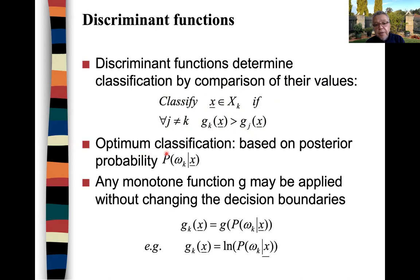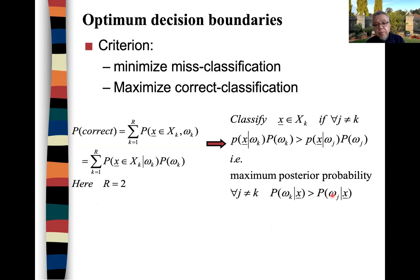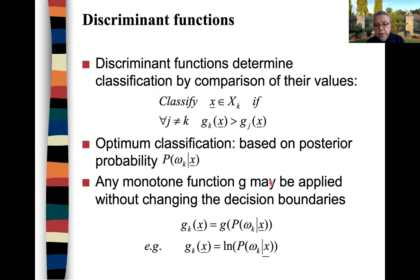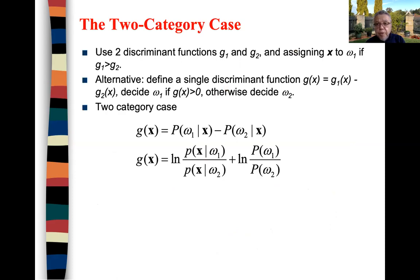The discriminant functions determine the classification by comparison of their values. We classify X as belonging to class WK if GK(X) > GJ(X) for any J different from K. In the Bayesian case, the optimum classification is based on the maximum posterior probability P(WK|X). Any monotone function G may be applied without changing the decision boundaries. We can use two discriminant functions G1 and G2 — one for W1 and one for W2 — or simply a single discriminant function equal to the difference G1(X) minus G2(X).